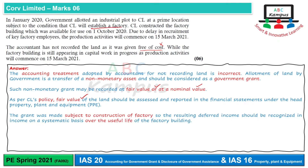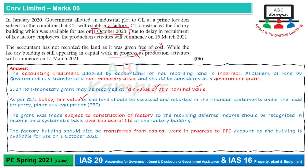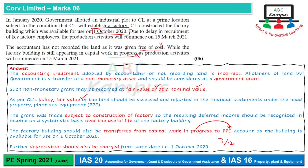The next issue is that the factory building should not remain in capital work in progress, because it was available for use from 1st October 2020. It should be transferred from capital work in progress to property, plant and equipment. Depreciation should also be charged from 1st October, so three months — October, November, and December — of depreciation should be charged. That's all for today, have a good day.